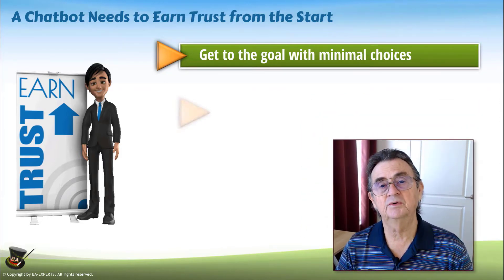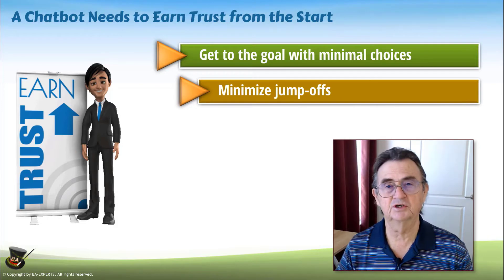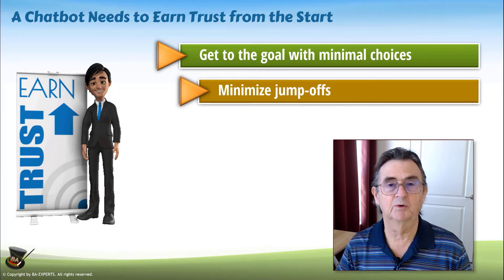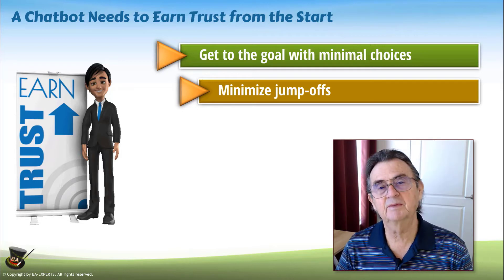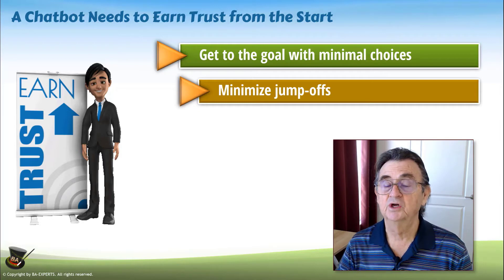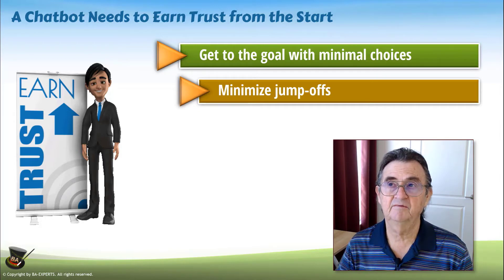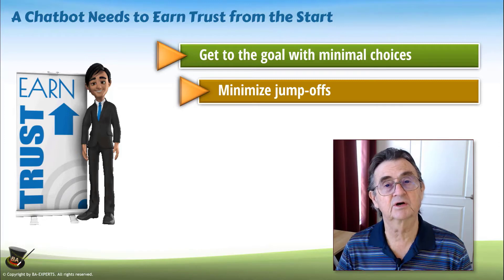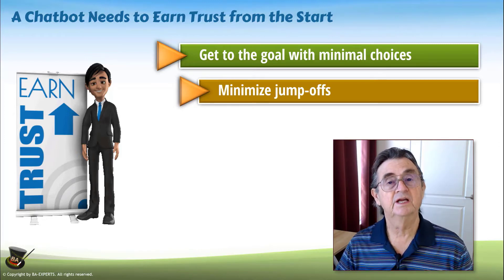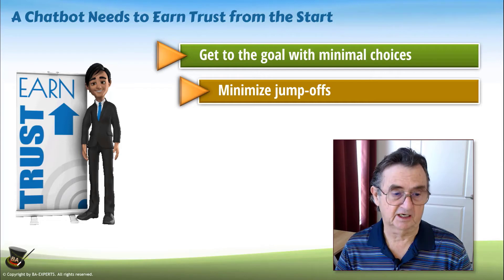You also want to try to minimize jump-offs. The jump-off is basically when somebody in the middle of the bot decides to quit, go somewhere else, do something else. So you want to minimize jump-offs by making sure that at every step of the way you are providing business value to the customer — meaning it's fairly obvious to the customer how they are moving forward in the conversation and not getting stuck.